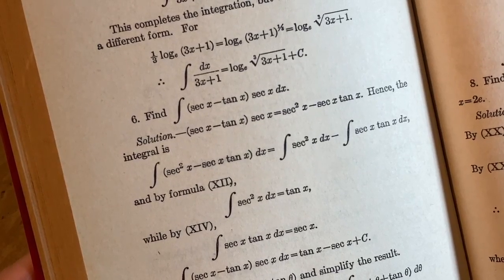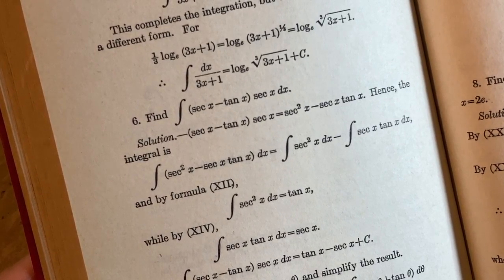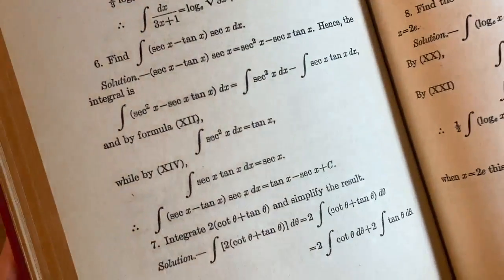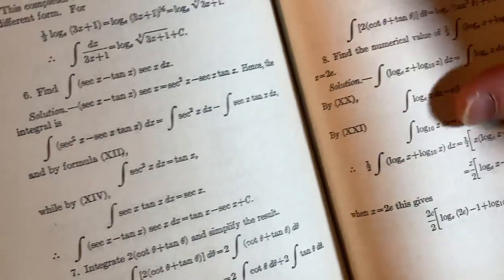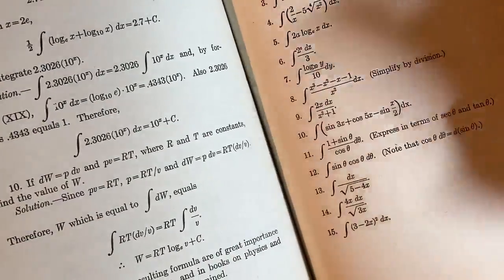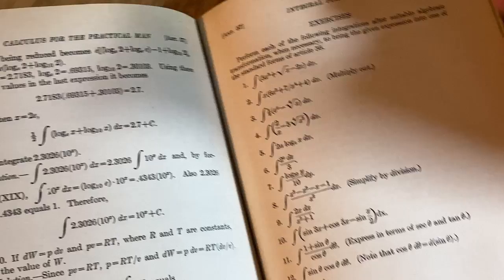So we've got this integral here, secant minus tangent, being multiplied by secant of x with respect to x. I guess you multiply everything out. And then from there, it's pretty easy. Pretty easy examples. But there's quite a few, as you can see. Lots of examples here. Lots of examples. And then you get to do the exercises and it's the same thing. So you get to practice what you learned.